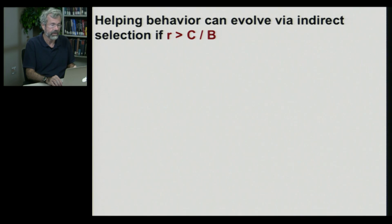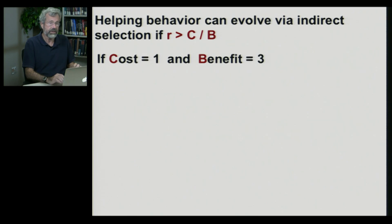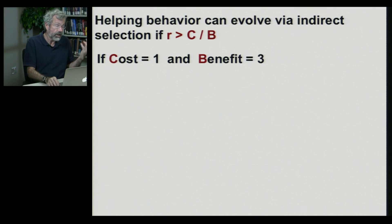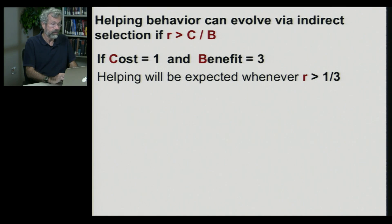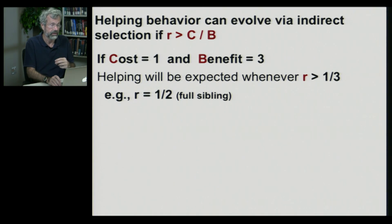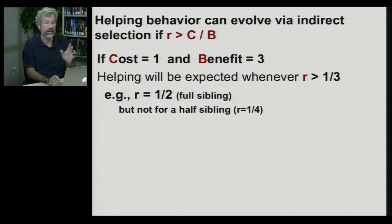Helping behavior is expected to evolve via indirect selection if R is greater than C divided by B. Let's put some numbers in: if by being nice to you I would lose one offspring I might otherwise have had over my life, but it benefits you with three additional offspring, that's a cost-to-benefit ratio of one-third. We'd only expect this niceness toward somebody related by more than one-third. So with a coefficient of relatedness greater than one-third, those are the individuals I'd be expected to help — full siblings, parents, or my own offspring, but not a half-sibling, not a niece, not full cousins.